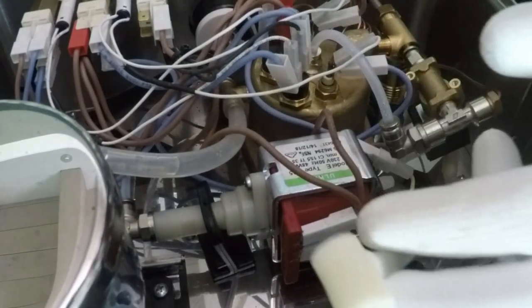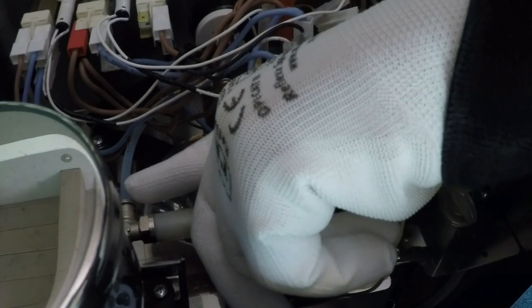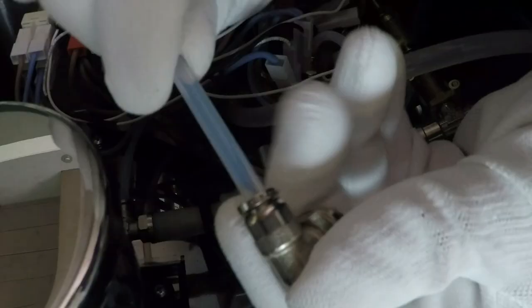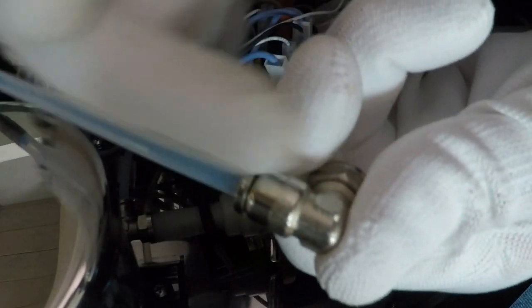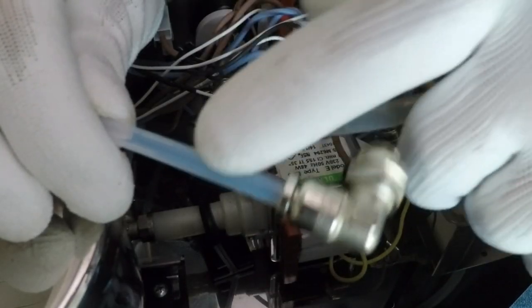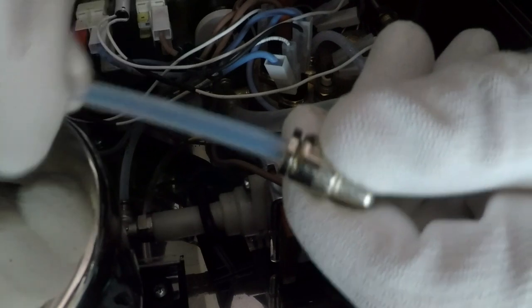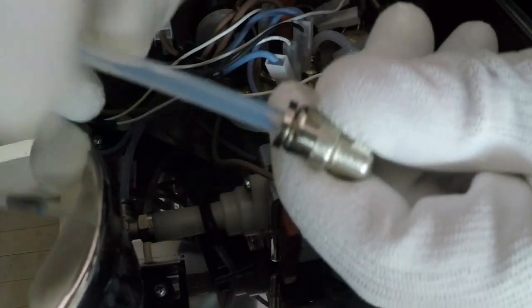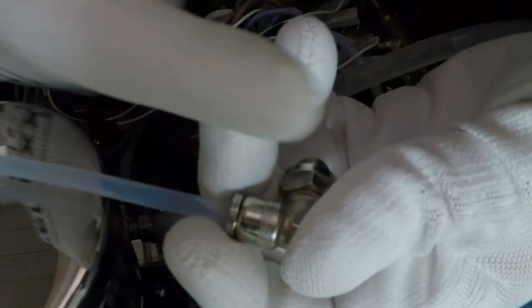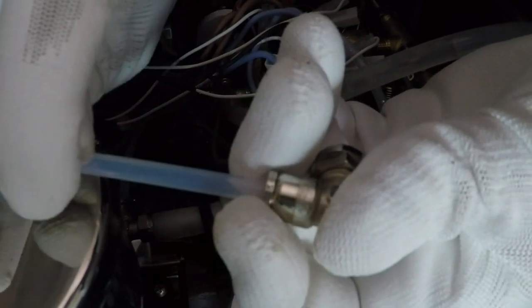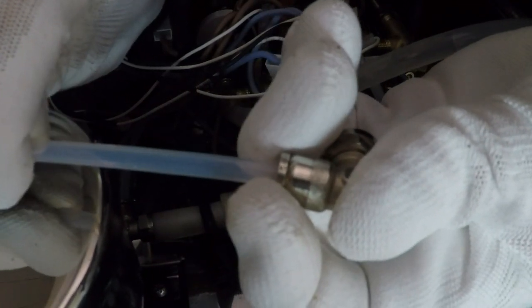Now we have to remove this tube to this fitting. When you want to insert this tube you have only to push. When you want remove this teflon tube from the fitting you don't have to pull the tube because you can damage the fitting. You have to pull this ring to pull in this size and take out the tube.